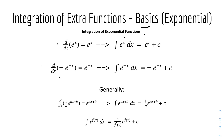For the second one, we have minus e to the power of minus x. The derivative of that will be e to the power of minus x, because the derivative of the power will be minus 1, and minus 1 times the coefficient will give 1. Therefore, for the integral: e to the power of minus x integrated gives minus e to the power of minus x plus c. Don't forget the plus c.